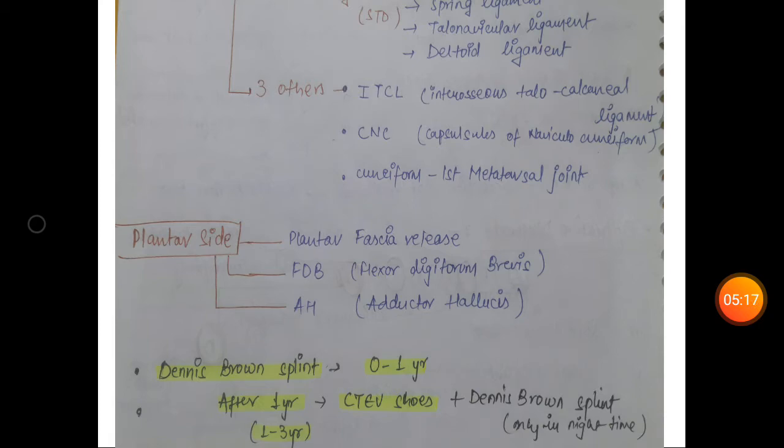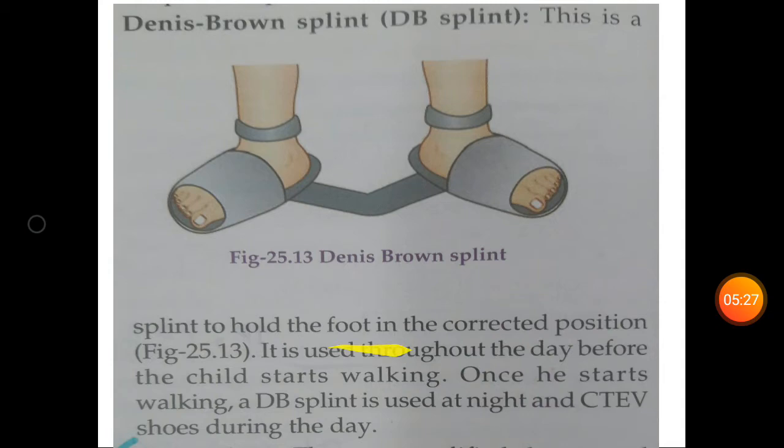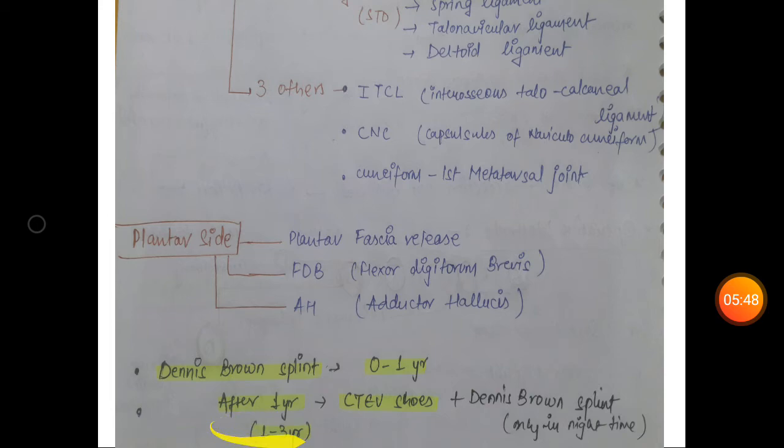Now we approach according to age. In children between 0 to 1 year of age, apply Dennis Brown splint. This is how Dennis Brown splint looks like: a splint to hold the foot in corrected position used throughout the day before the child starts walking. After the child starts walking, Dennis Brown splint is used at night and CTEV shoes during the day.